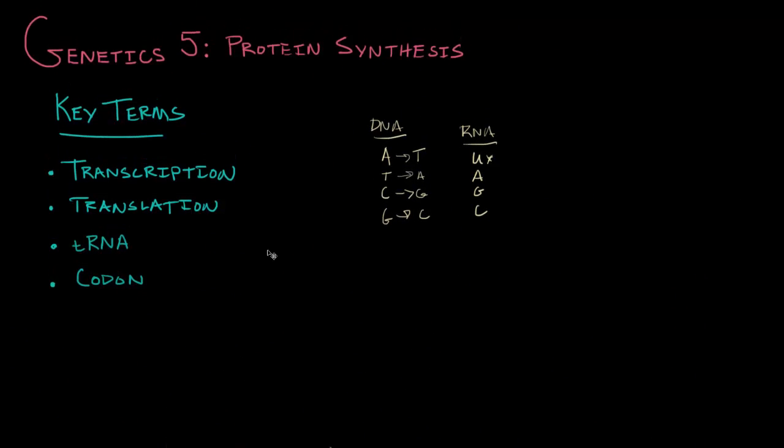To review. Transcription is the process of copying over the DNA message into RNA. Translation is taking that mRNA at the ribosome and building the protein from it. tRNAs were a new thing we added and they are the helpers that carry the amino acid to the ribosome to build the proteins. And a codon. A codon is a group of three bases on mRNA that helps determine which amino acid should be placed in that location.